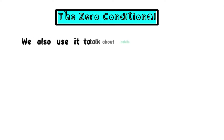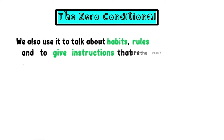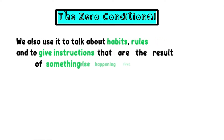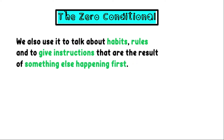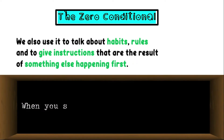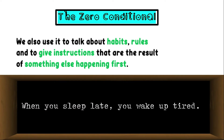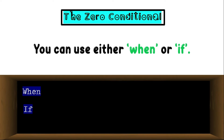We also use it to talk about habits, rules, and to give instructions that are the result of something else happening first. When you sleep late, you wake up tired. This is a habit and also a rule. You can use either 'when' or 'if' in the zero conditional — both work.